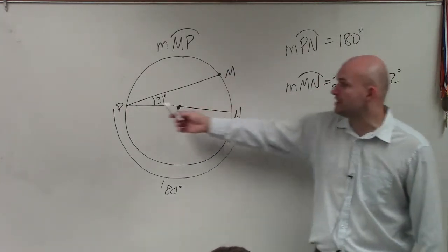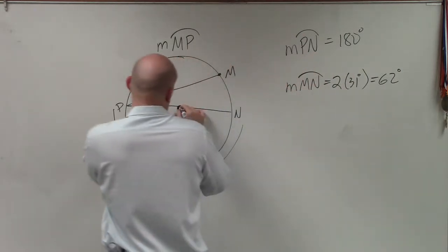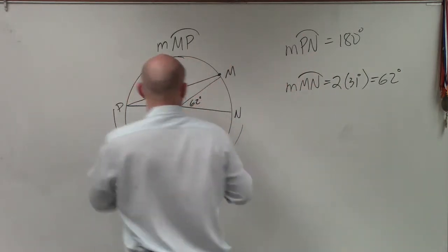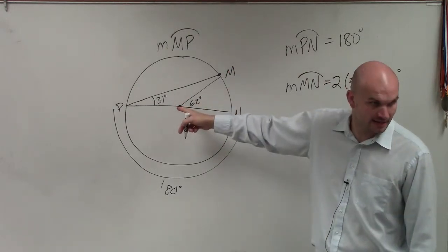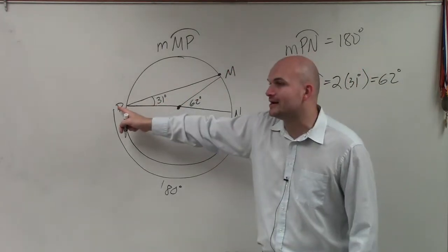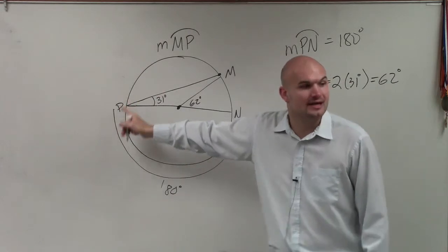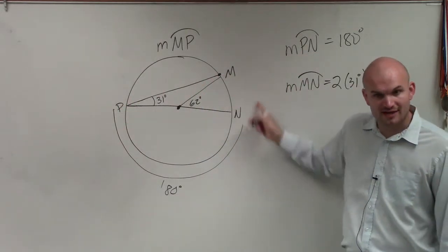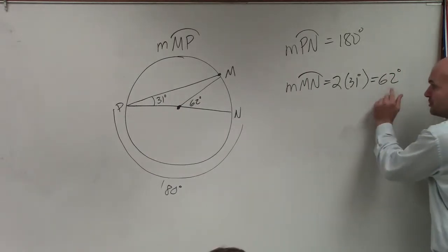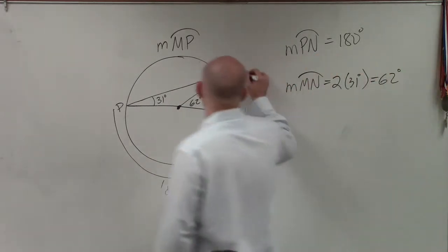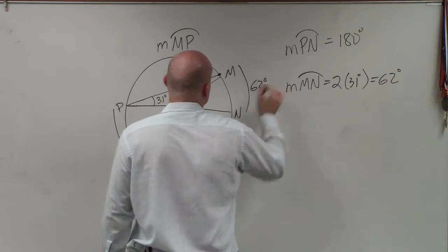To find this arc, remember when it was like this, if you have a central angle, the arc is the same as the central angle. But when the vertex is on the circle, it's double the value to find the arc measure of your angle. So therefore, it's 2 times 31 equals 62. So now I know from here to here is 62 degrees.